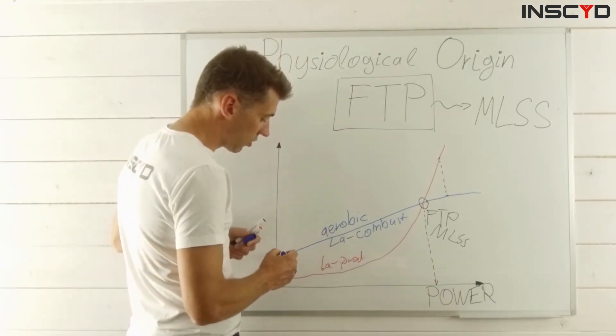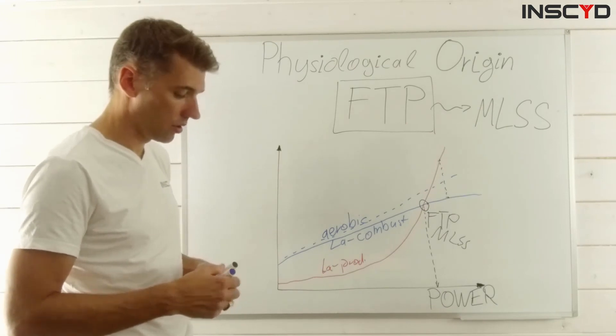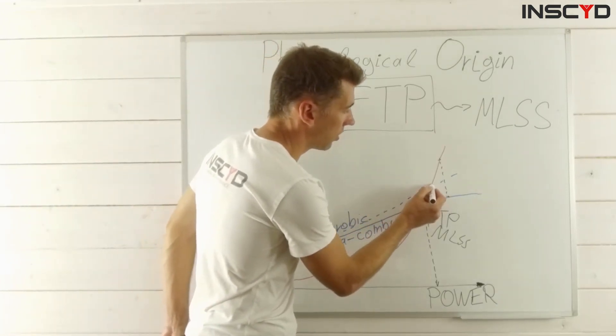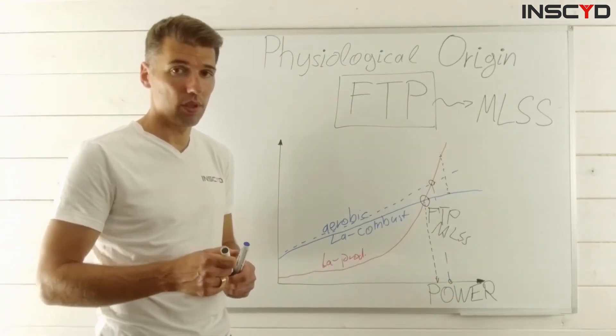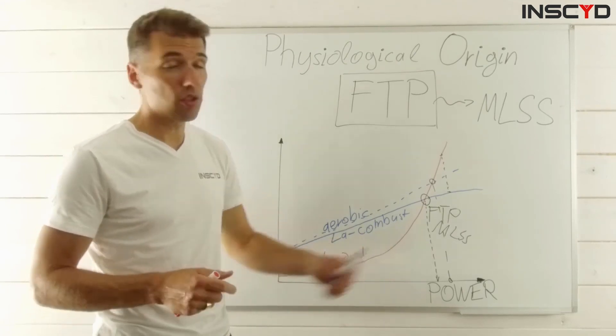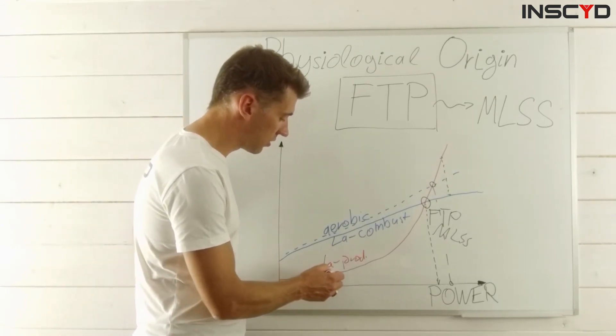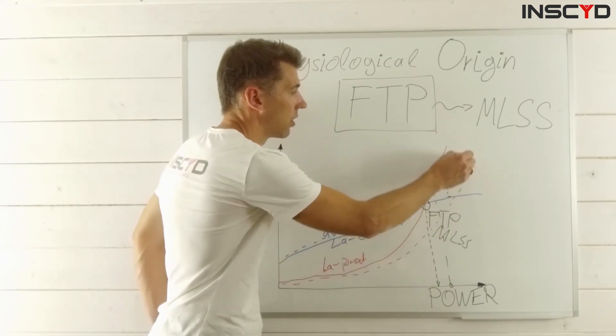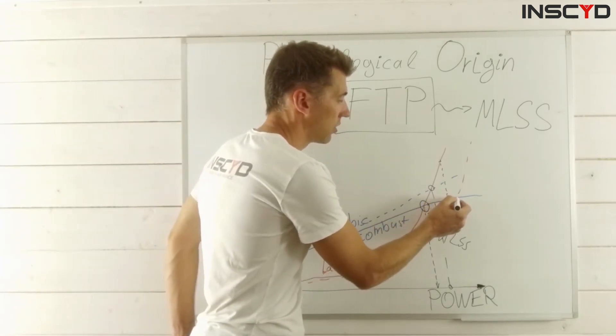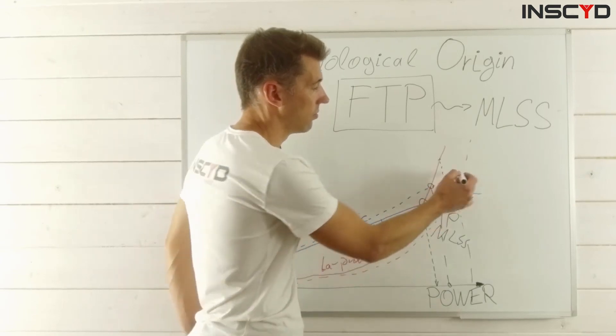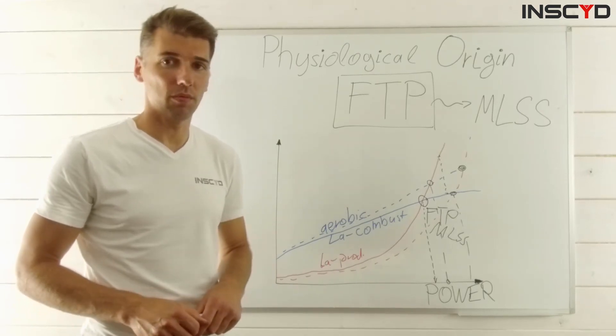What you can do is, for example, increase the ability to combust lactate. In this case, the crossing point would be further to the right and you basically have higher power output. Another way to increase your maximum lactate steady state FTP power, whatever you call that, is obviously to decrease the amount of lactate that is produced, hence also shifting the crossing point further right. Or do both, and you increase your power output even further.